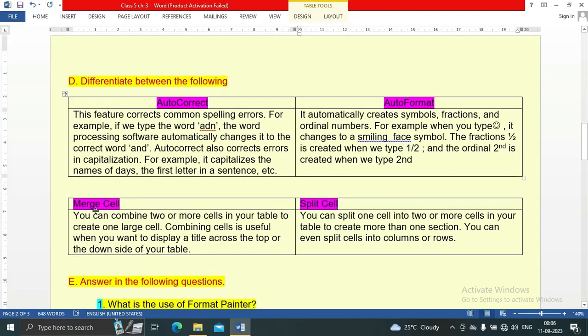Merge cell: You can combine two or more cells in your table to create one large cell. Combining cells is useful when you want to display a title across the top or down the side of your table. Split cell: You can split one cell into two or more cells in your table to create more than one section. You can even split cells into columns or rows.